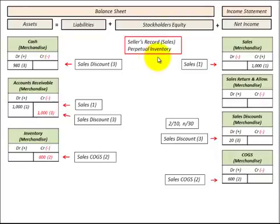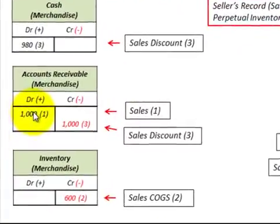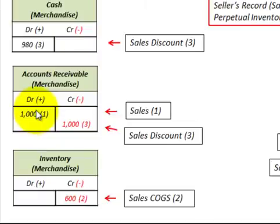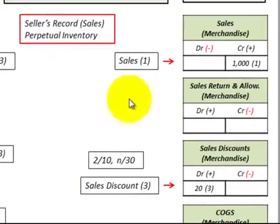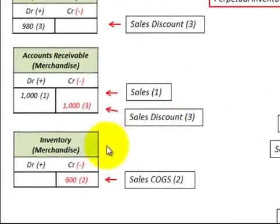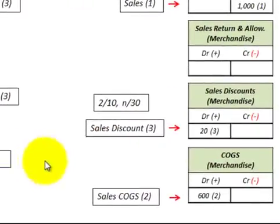Now let's look at sales discounts from the seller's perspective. Sales is a revenue account on the income statement. Say we make a sale on account for $1,000 — we increase accounts receivable, an asset on the balance sheet, and credit our sales revenue account for $1,000. We also need an entry to reduce inventory; say our inventory cost was $600, so we reduce inventory by $600 and increase cost of goods sold by $600.